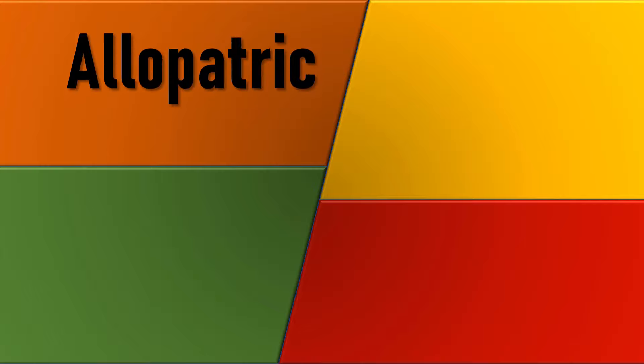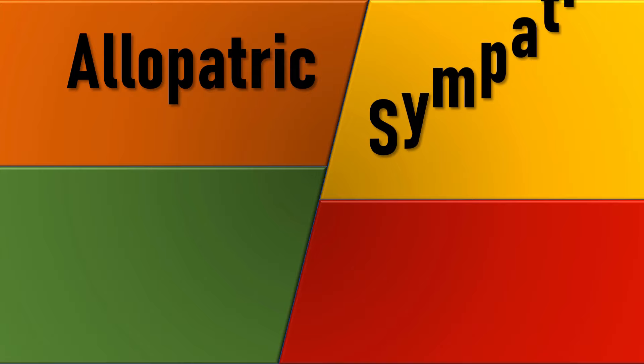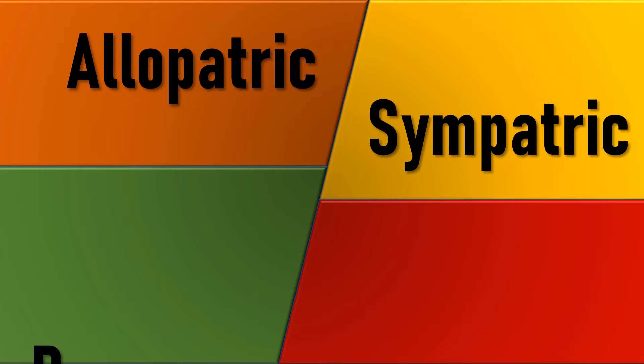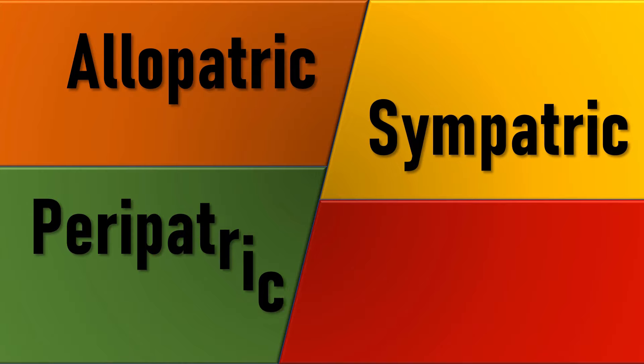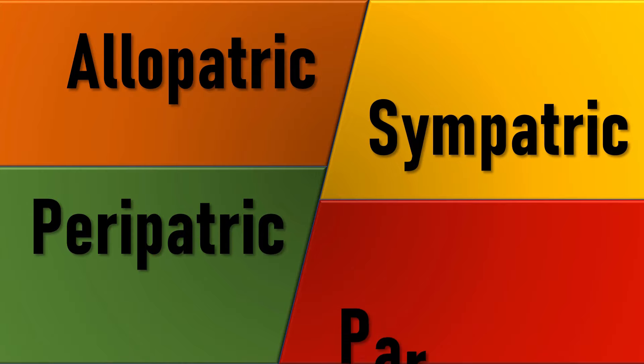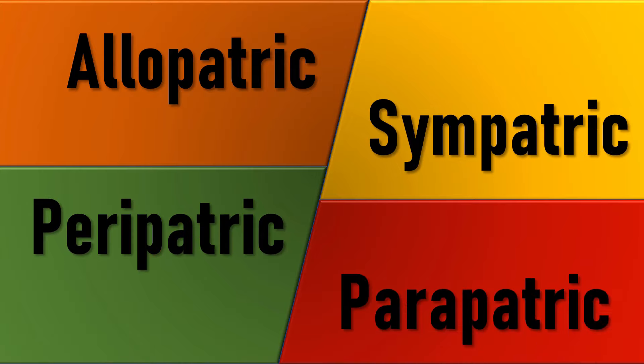Speciation can occur in four ways: allopatric, sympatric, peripatric, and parapatric speciation.